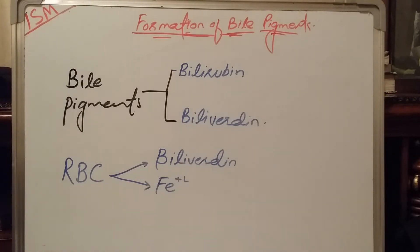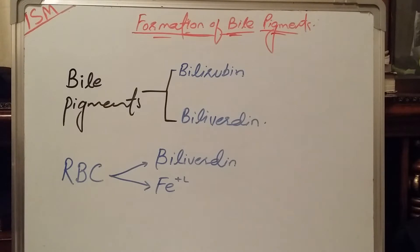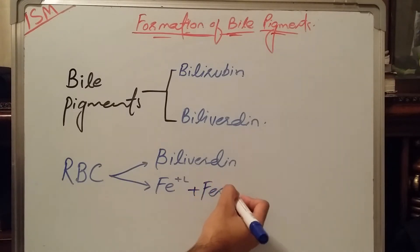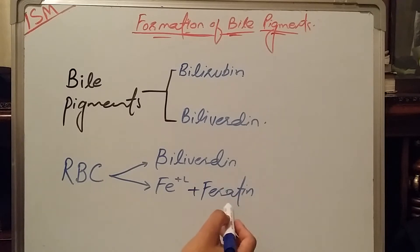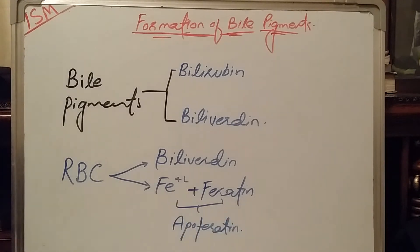Biliverdin is converted into bilirubin, and the iron from the heme factor is taken out by certain enzymes. The excess amount of iron is stored by transferrin, and the stored iron goes into ferritin — specifically apoferritin. Simply put, RBCs are broken down into biliverdin and a heme factor; biliverdin is converted into bilirubin, and the iron part is utilized for further synthesis of RBCs.